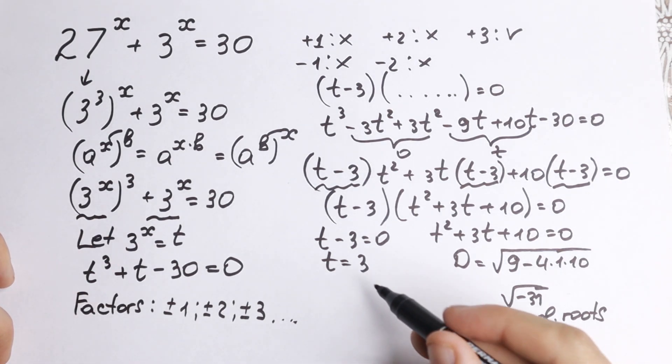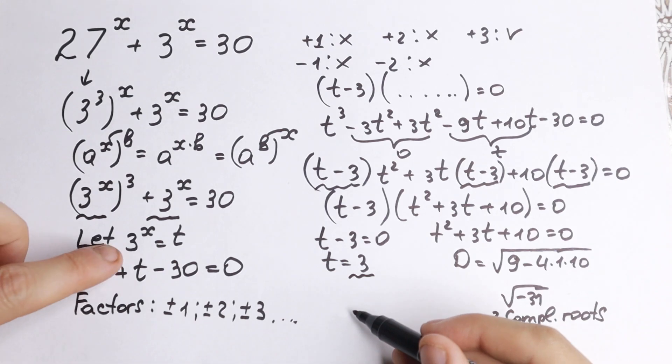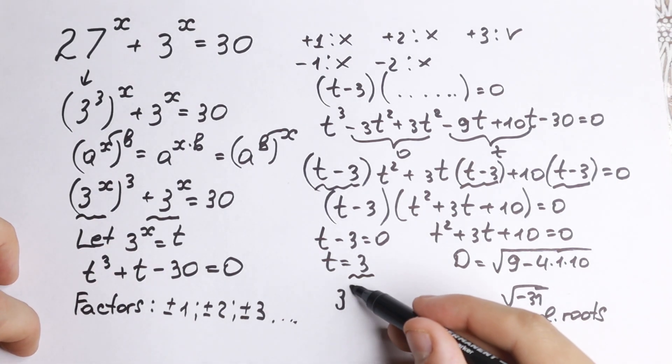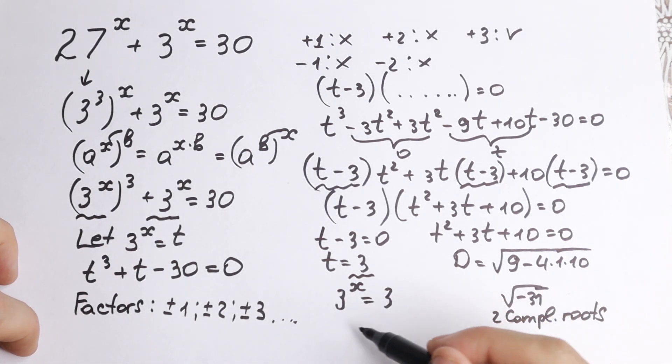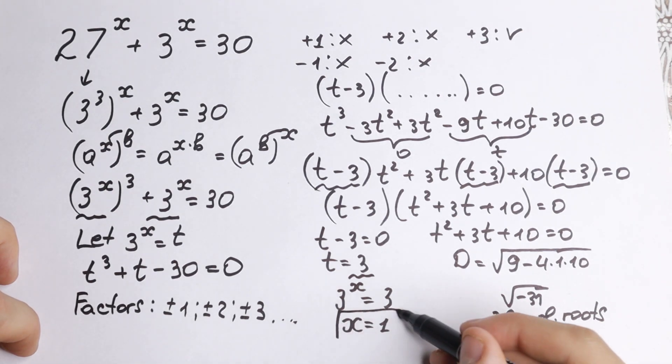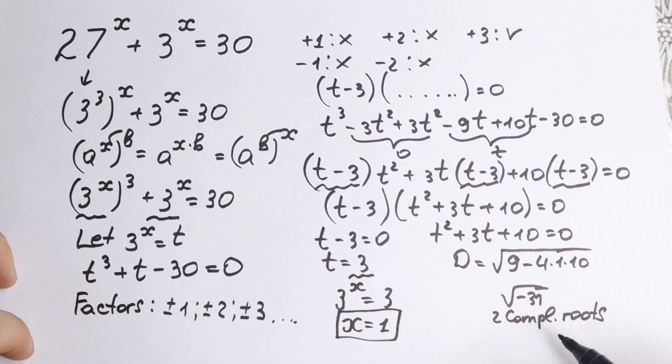But we're interested in real roots. We have t equal to 3, but 3 to the x equal to t. So we will have 3 to the x equal to 3 and x equal to 1. This is our answer.